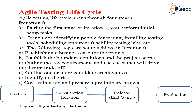During the first stage, that is Iteration 0, you perform the initial task. The initial task involves identifying the people for testing - you need to identify who will come for the testing process. Then installing testing tools: what tools are required? Who has thorough knowledge of those tools? If you know QTP, the functional tester, Selenium, or JUnit - those are the people who will be chosen.